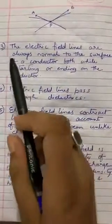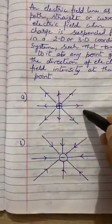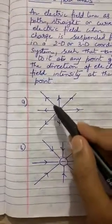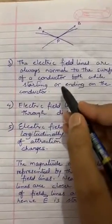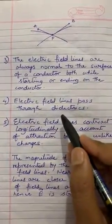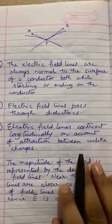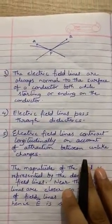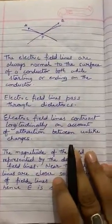The third point: electric field lines are always normal to the surface of the conductor. As we can see in the example, the electric field lines from an isolated positive charge are normally outward, and normally inward for a negative charge. The fourth point: electric field lines pass through the dielectric. Air and vacuum both act as insulators, which are dielectrics, and dielectrics have the property of producing induced charges without being conducted. Hence, the electric field lines pass through air or vacuum.